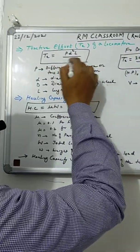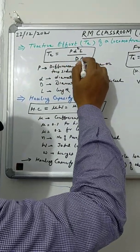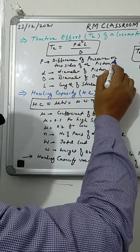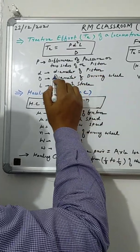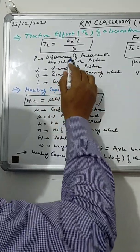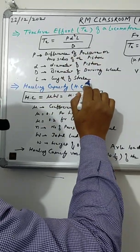The tractive effort of a locomotive can be computed by this expression: P D² L / D, where P is the difference of pressure on the two sides of the piston, D is the diameter of the piston, capital D is the diameter of the driving wheel, and L is the length of the stroke.